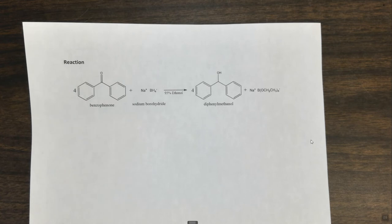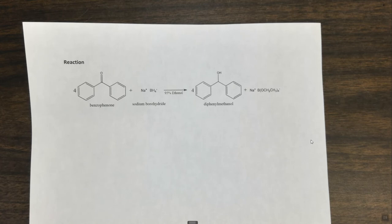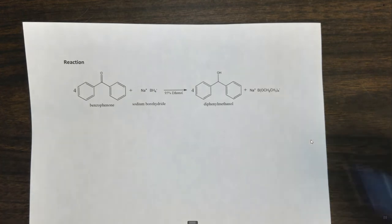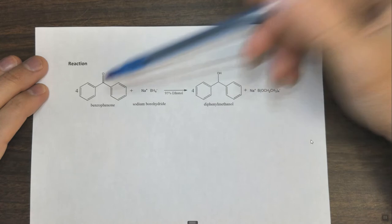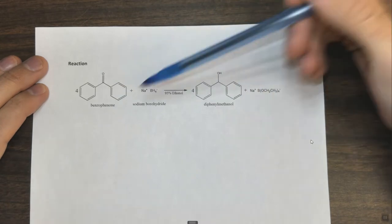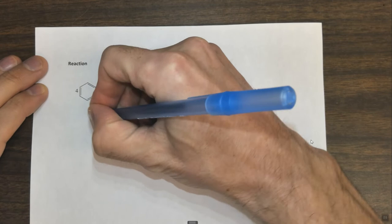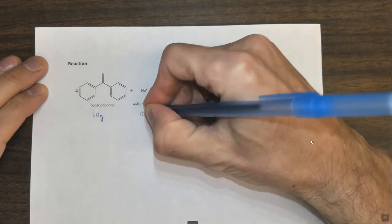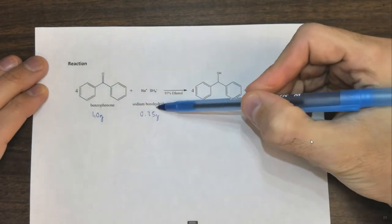It's very difficult to decide what to do first, but what I'm going to do first is look at what we're doing in the reaction. After we have some idea of what's actually going on, we'll talk about things like the theoretical yield, the mechanism, the hypothesis, the separation scheme — all the stuff you need for a pre-lab. So we're taking benzophenone and forming diphenylmethanol. We're going to take one gram of benzophenone and 0.25 grams of sodium borohydride.